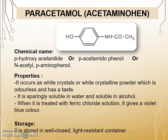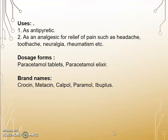The next drug is Paracetamol, also called Acetaminophen. Its chemical names are para-hydroxyacetanilide, paracetamidophenol, or N-acetyl-para-aminophenol. Property: it occurs as a white crystalline powder, odorless with a bitter taste. It is sparingly soluble in water and soluble in alcohol. When treated with ferric chloride solution, it gives a violet-blue color. Storage: stored in a well-closed, light-resistant container. Uses: as an antipyretic and analgesic for relief of pain such as headache, toothache, neuralgia, and rheumatism. Dosage forms: paracetamol tablet and paracetamol elixir. Brand names: Crocin, Metacin, Calpol, Paramore, and Efferalgan.